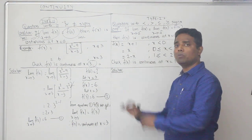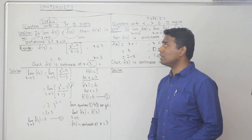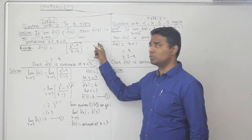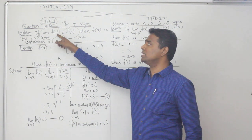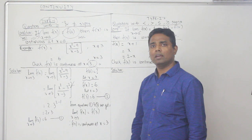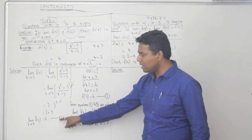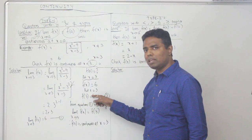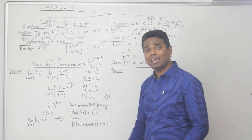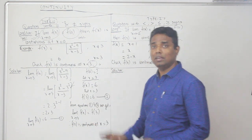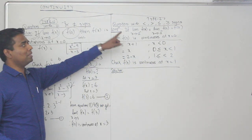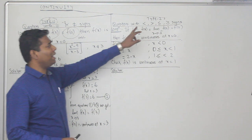To summarize Type 1: when you see equal to and not equal to conditions, find the limit x→a f(x) and f(a). If both are equal, the function is continuous. If they are not equal, then the function is discontinuous.